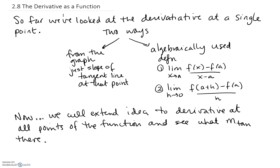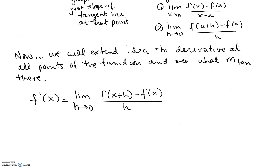So what we'll do now is extend the idea to the derivative at all points of the function — for various x's — and see how the tangent lines behave at all those x's throughout the graph. We basically look at any x, not necessarily just a, and we look at the difference quotient and the limit, and we define the derivative at all points x.